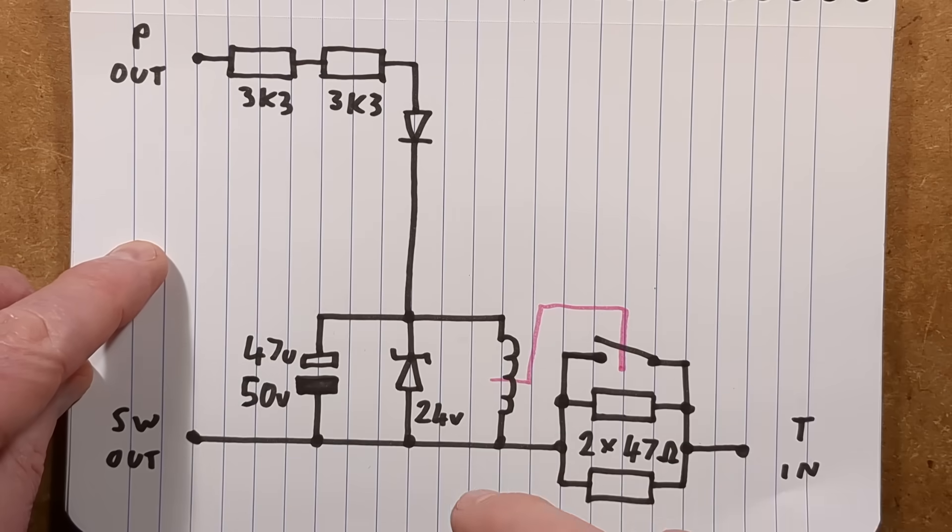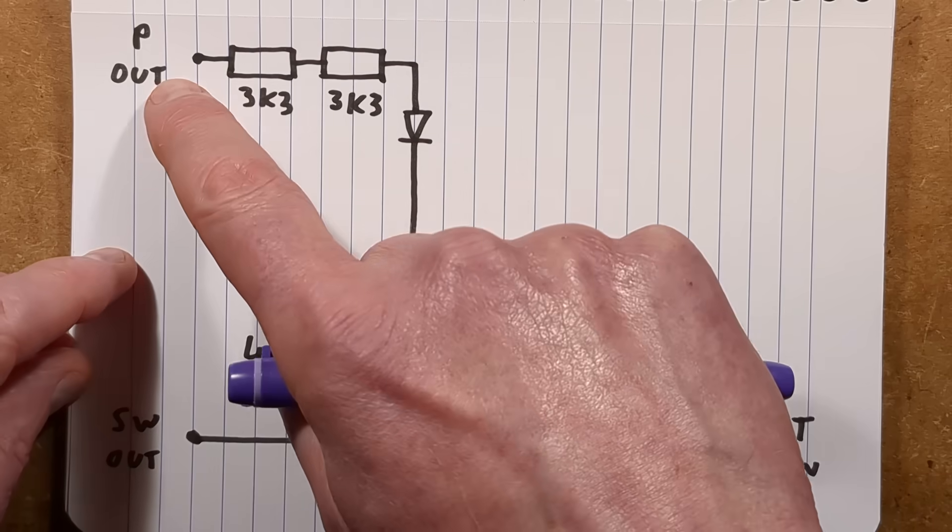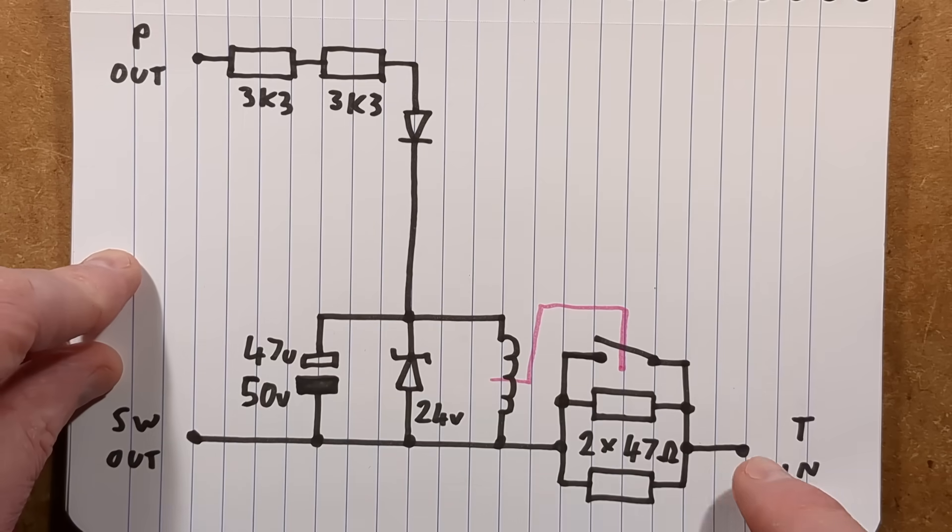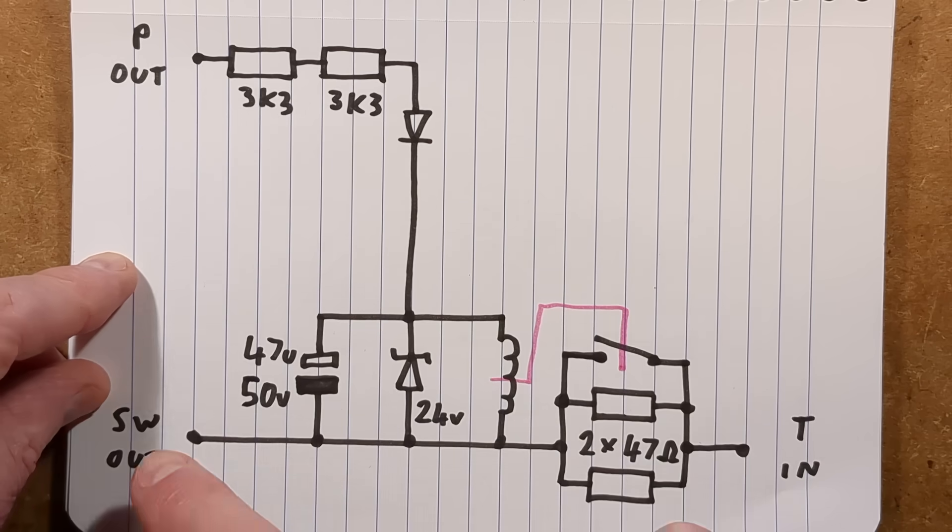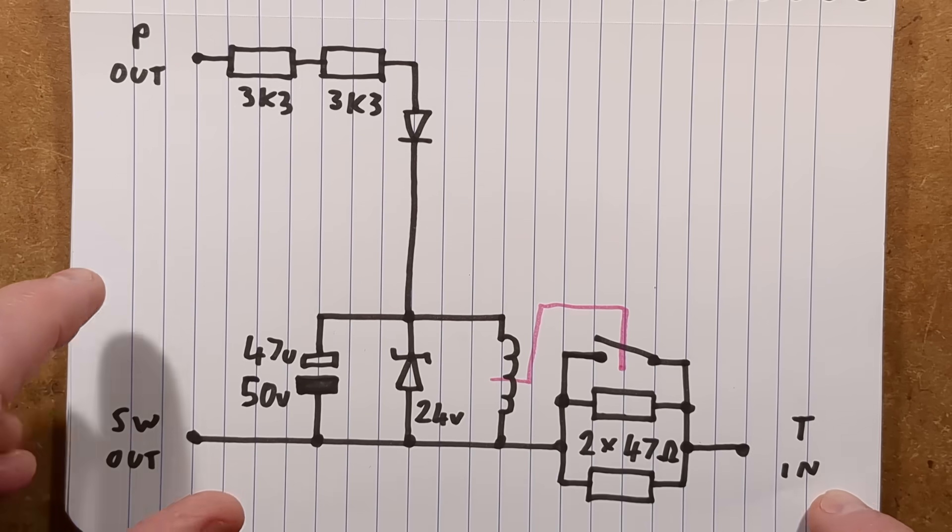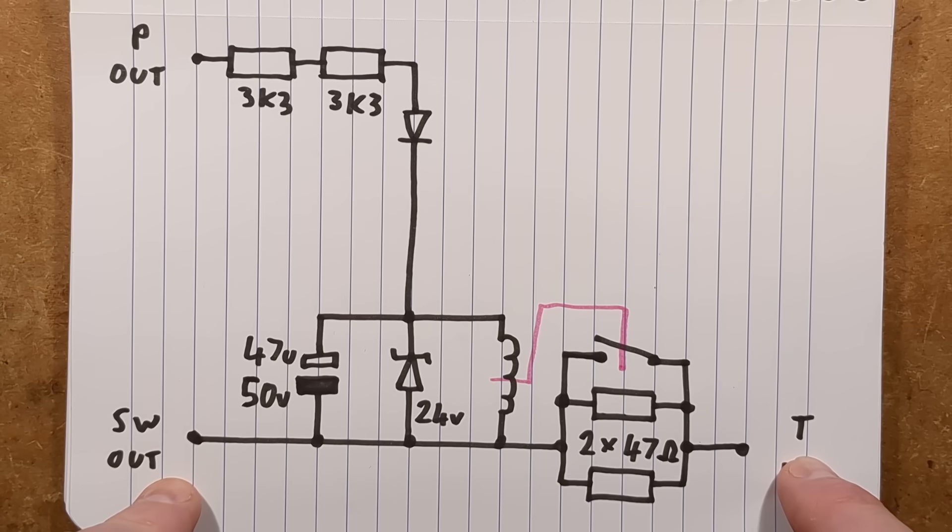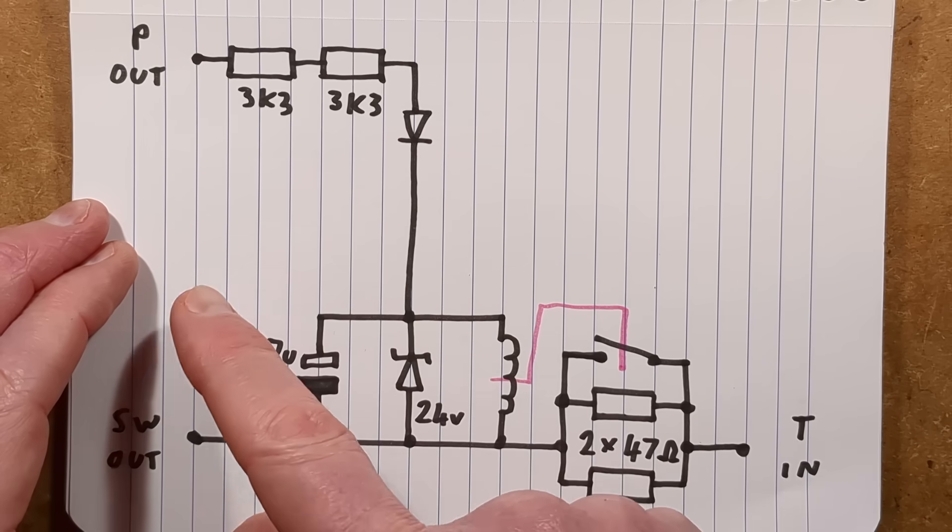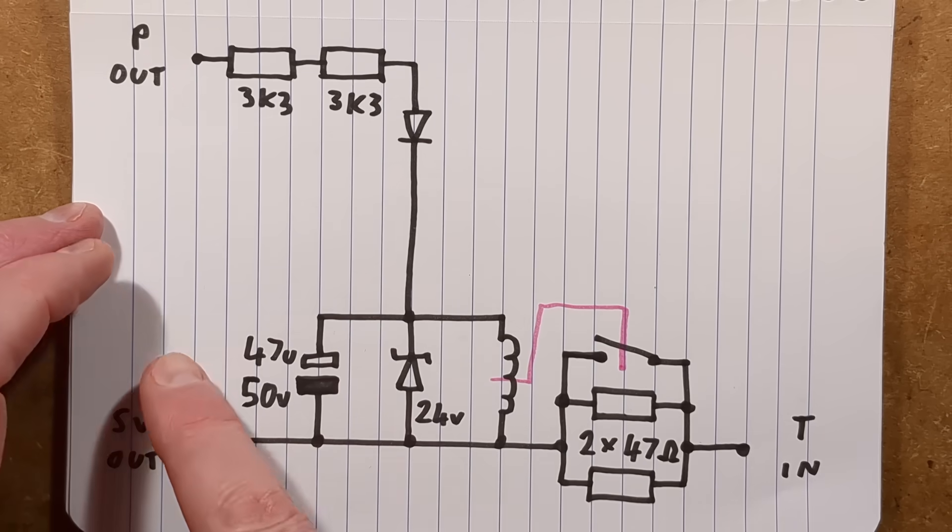So the terminology on the circuit board on the other part, it was just live in, live out, neutral in, neutral out. This one's got P out, SW out, and then T in. The closest I can really approximate is this is neutral, this is live, and this is the output to the transformer. It would work with both these swapped but in a slightly different way. However, this is the way I hooked it up to demonstrate it.